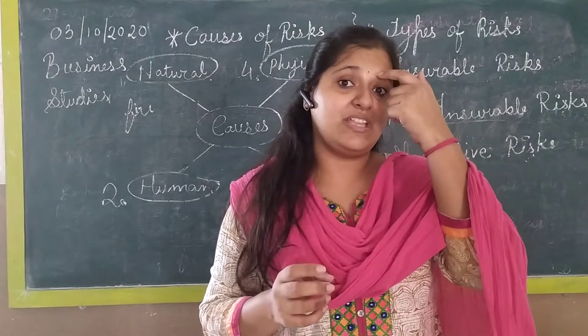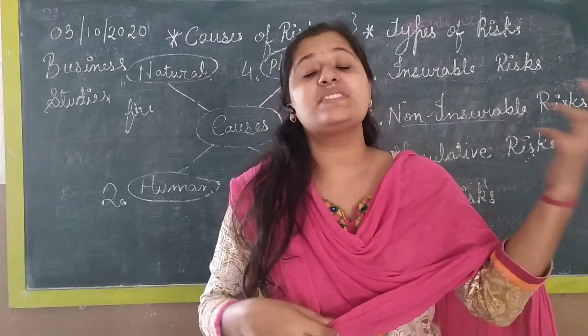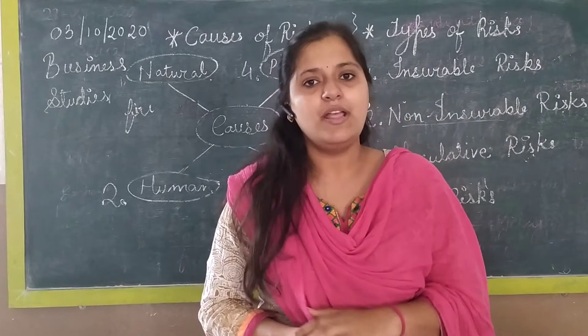Another example of human causes: consider a factory where there is labor. If for some reason there is a strike by the workers, that can also result in a business loss. So labor strikes and employee-related issues are included in human causes of business risk.